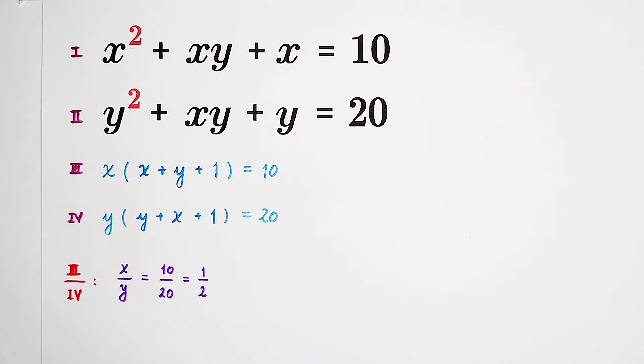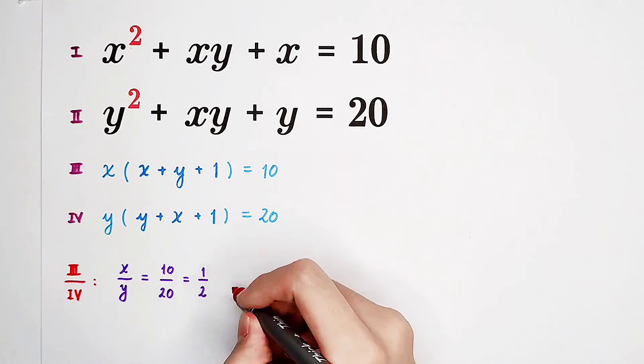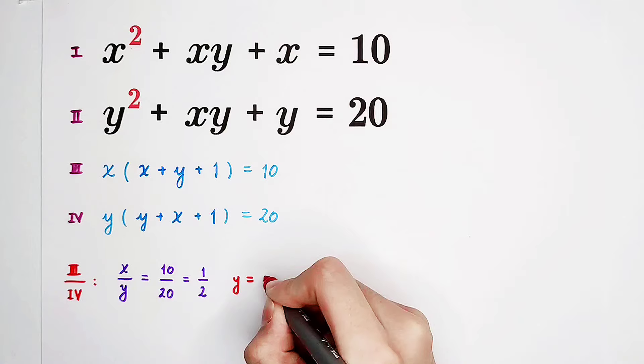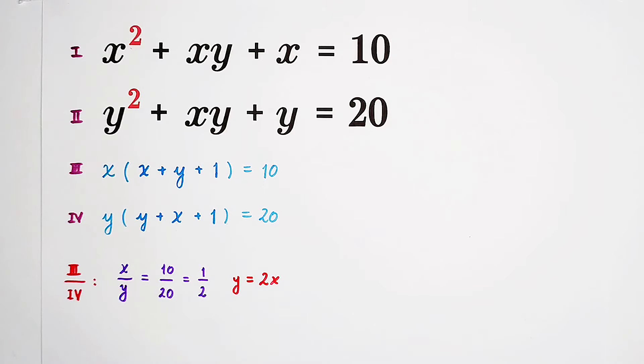So now we get the ratio of x and y is 1 over 2. Multiply both sides by y. Then we get x equals y over 2, or y equals 2x. Now we've got the relationship between x and y, so we can substitute y equals 2x.